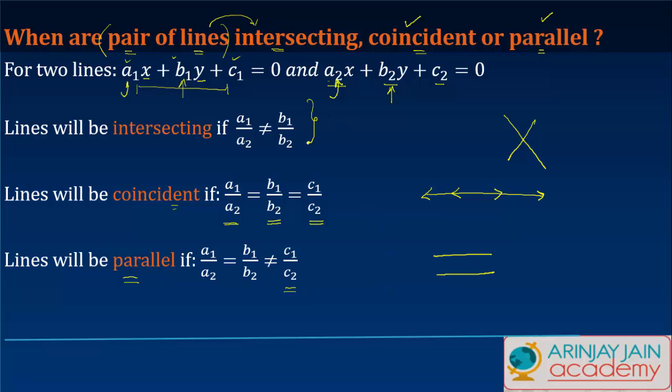Let me give you a small example of each. Say you have two lines: 2x + 3y = 6 and 4x + 6y = 12. In this case, a1/a2 will be 2/4, b1/b2 will be 3/6, and c1/c2 will be 6/12.